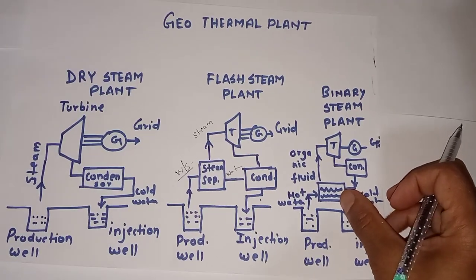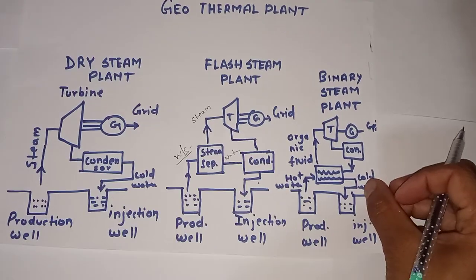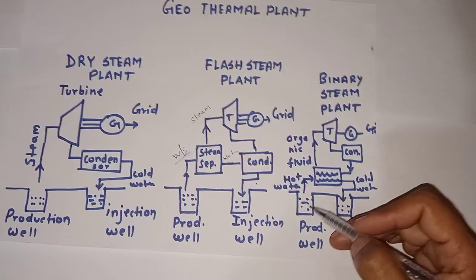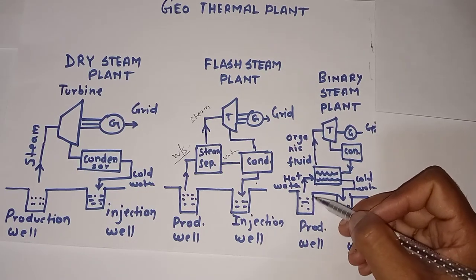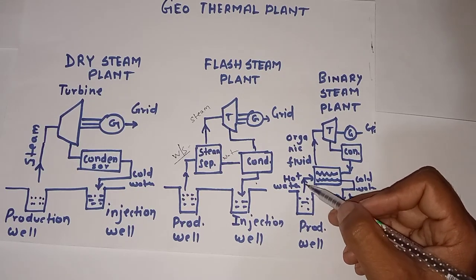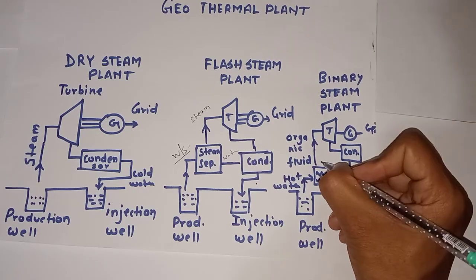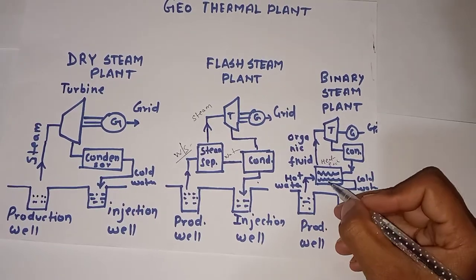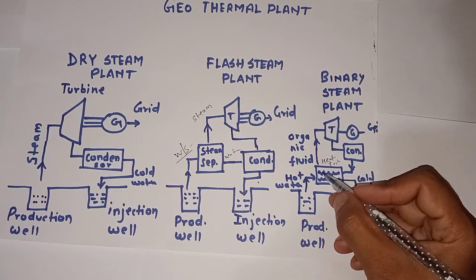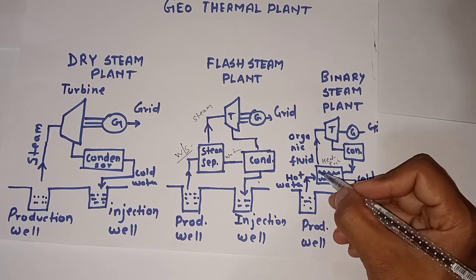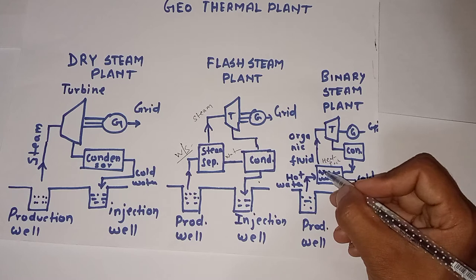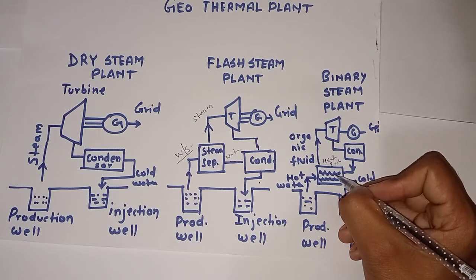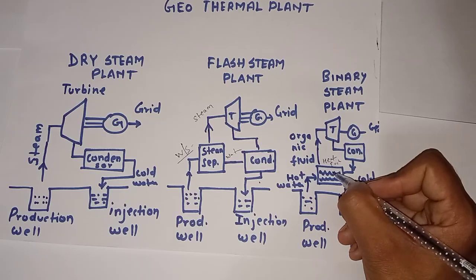Now we will see the binary steam plant. The same general process applies, but the mechanism is different. Hot water is taken from the production well and sent to a heat exchanger. The heat exchanger maintains a temperature difference, creating much hotter water on one side while maintaining a uniform temperature on the other side.